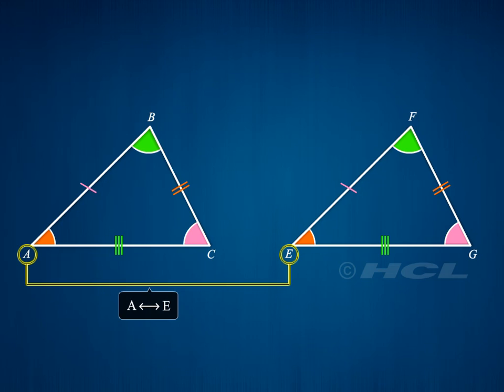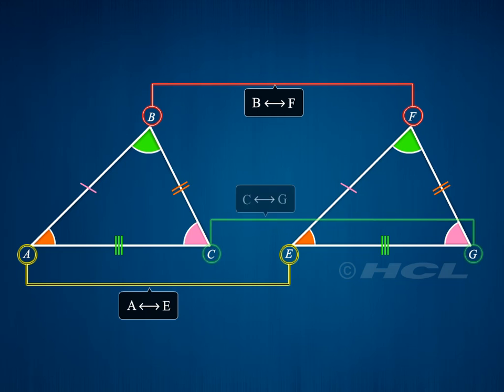Here, vertex A corresponds to vertex E, vertex B corresponds to vertex F, and vertex C corresponds to vertex G.